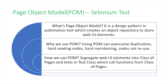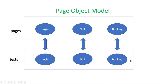Let's look at the diagram to understand this more. We have classes of pages, which contain UI elements and different web functionality testing functions. Then the class of tests basically calls those pages — it calls those UI elements and those functions and tests the pages.